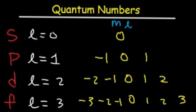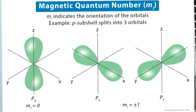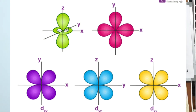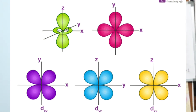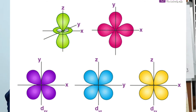If L=2, there are 2(2)+1=5 ML values: −2, −1, 0, +1, +2 — representing the five D orbitals: Dxy, Dyz, Dxz, Dx²−y², and Dz². If L=3, there are 2(3)+1=7 ML values: −3, −2, −1, 0, +1, +2, +3 — representing the 7 F orbitals. The magnetic quantum number explains the orientation of orbitals — how P orbitals are oriented as Px, Py, Pz, and D orbitals in their five different orientations.